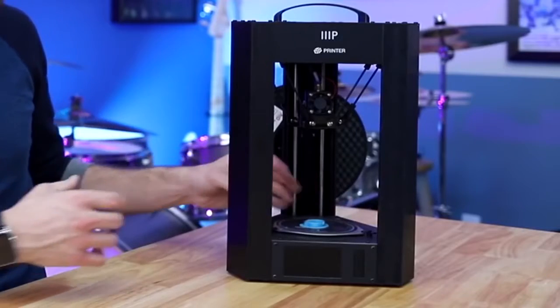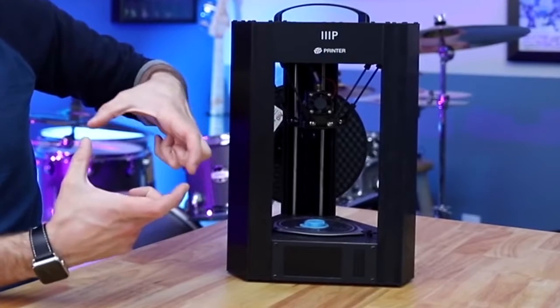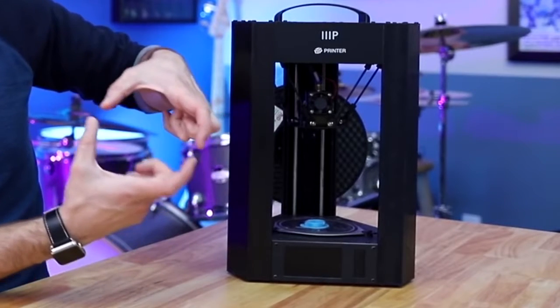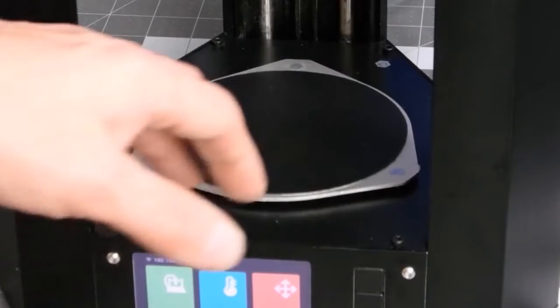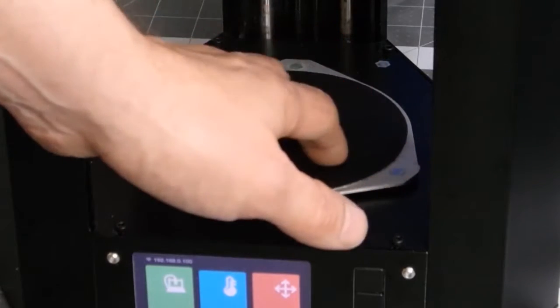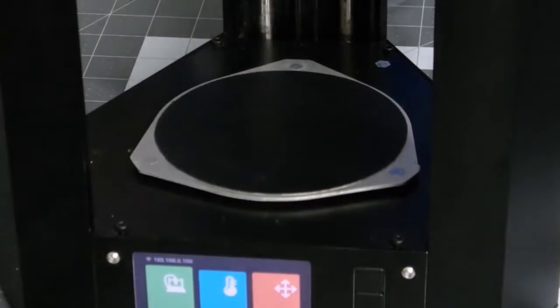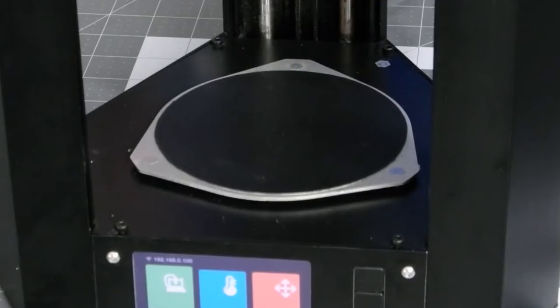As you might guess from the name, the Mini Delta is tiny. It measures 17.5 x 11.8 x 11 inches. Accordingly, the build area is a little smaller than average. It's cylindrical and will do for making small to medium-sized models. Larger objects will have to be assembled from parts afterward.